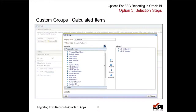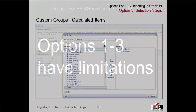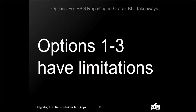A third option available is the use of features in Oracle BI 11G called selection steps and custom groups. This method is extremely flexible and will allow you to construct almost any kind of financial statement report. However, these reports are extremely hard to tune and require fairly complex report-building skills in Oracle BI. So to summarize, although there are options available in Oracle BI to build FSC reports, they have certain limitations that we have tried to overcome with our KPI offering.